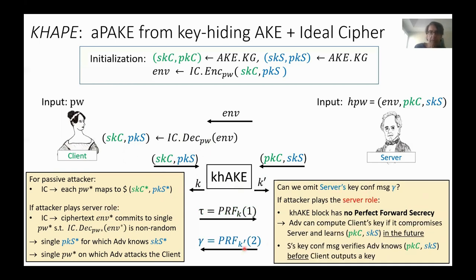The server's key confirmation is a little more subtle. Without it, the protocol would be insecure against future compromises of the server: past client sessions that use the key without waiting for the key confirmation would be insecure if the adversary later learns the server's values, completes the protocol offline, and now knows the key for all prior sessions. With the key confirmation, this is stopped.